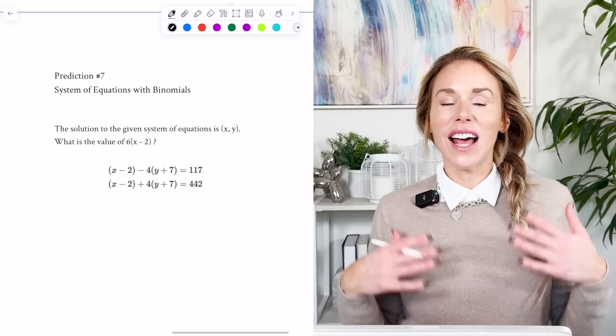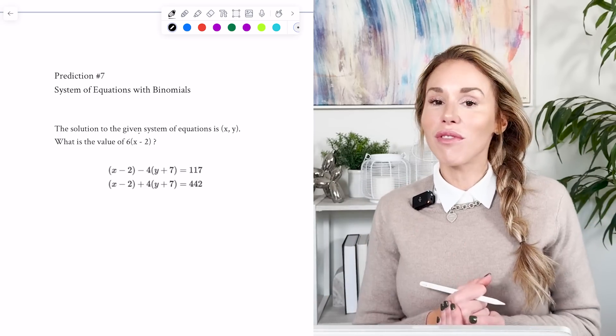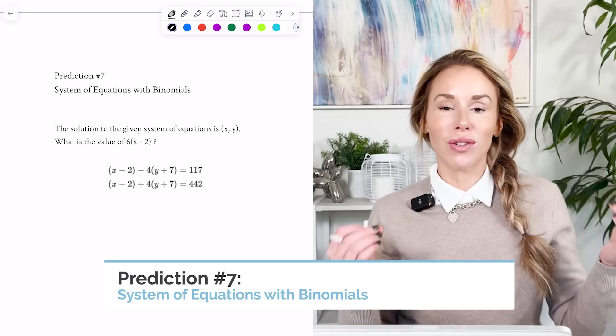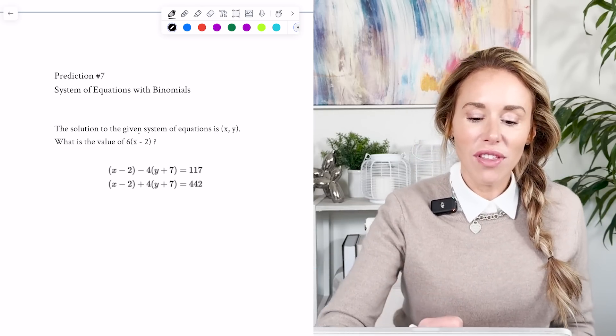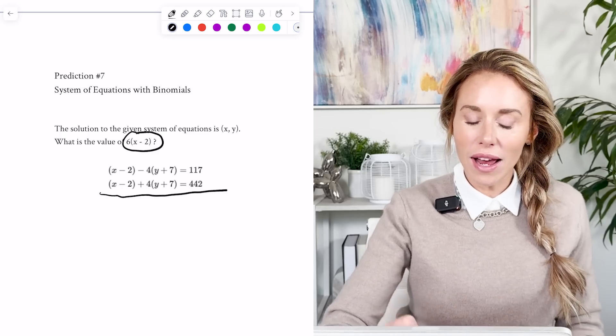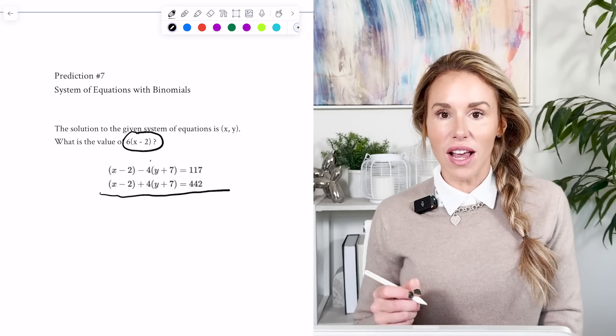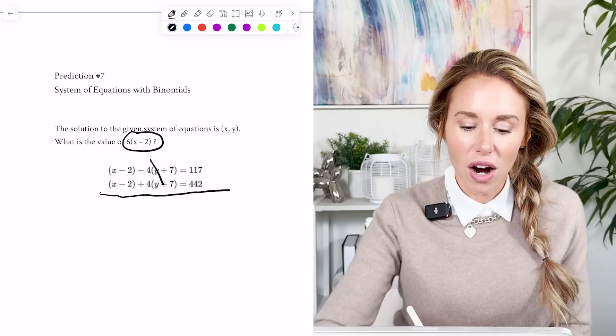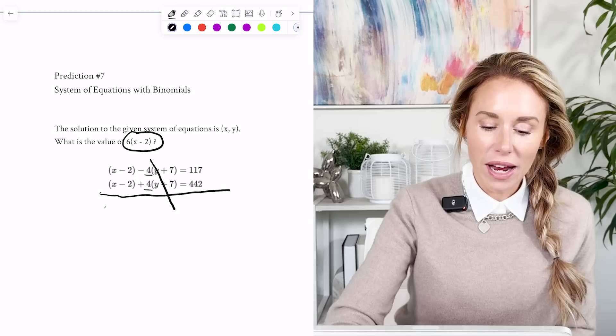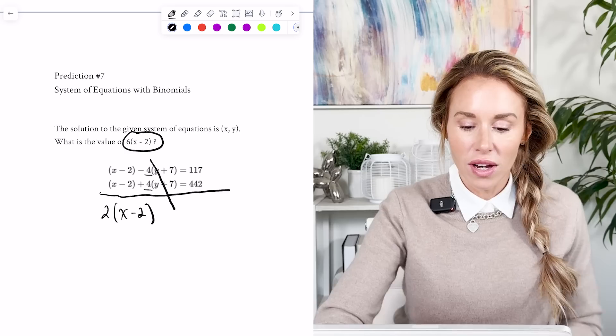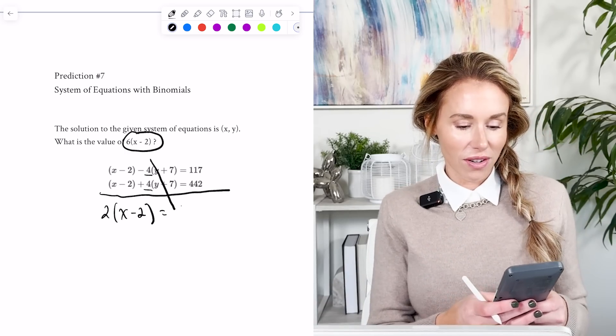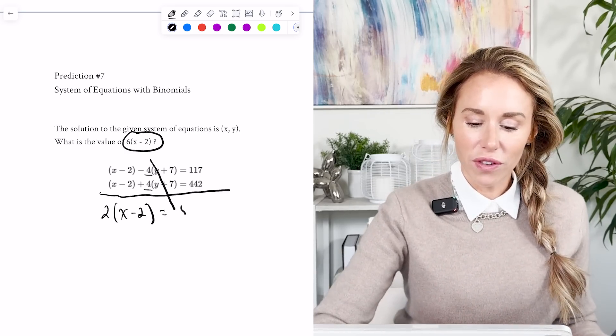All right. Prediction number seven. I am predicting you're going to have a system of equations with binomials. They're actually very easy. Just treat the binomial like it's a variable. So if they want the value of six times x minus two, I'm going to actually get rid of the y plus sevens. And I see that they already cancel out because I have negative four of them and positive four of them. So when I add these together, I have two x minus twos, and then I just have to add together 117 and 442.